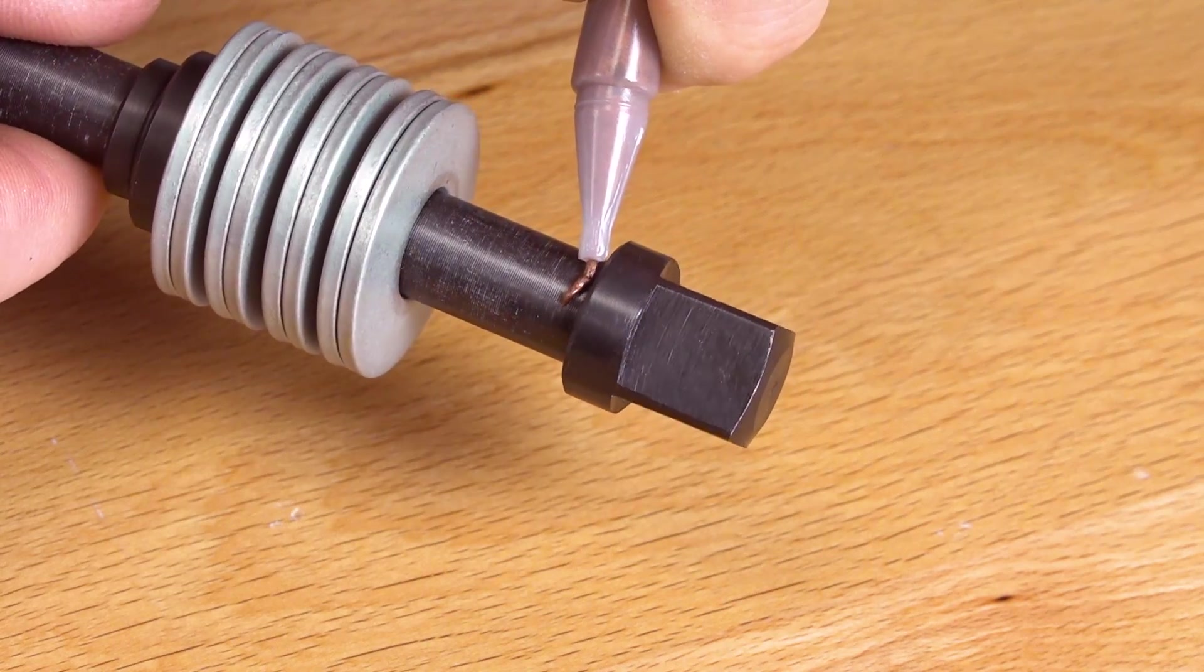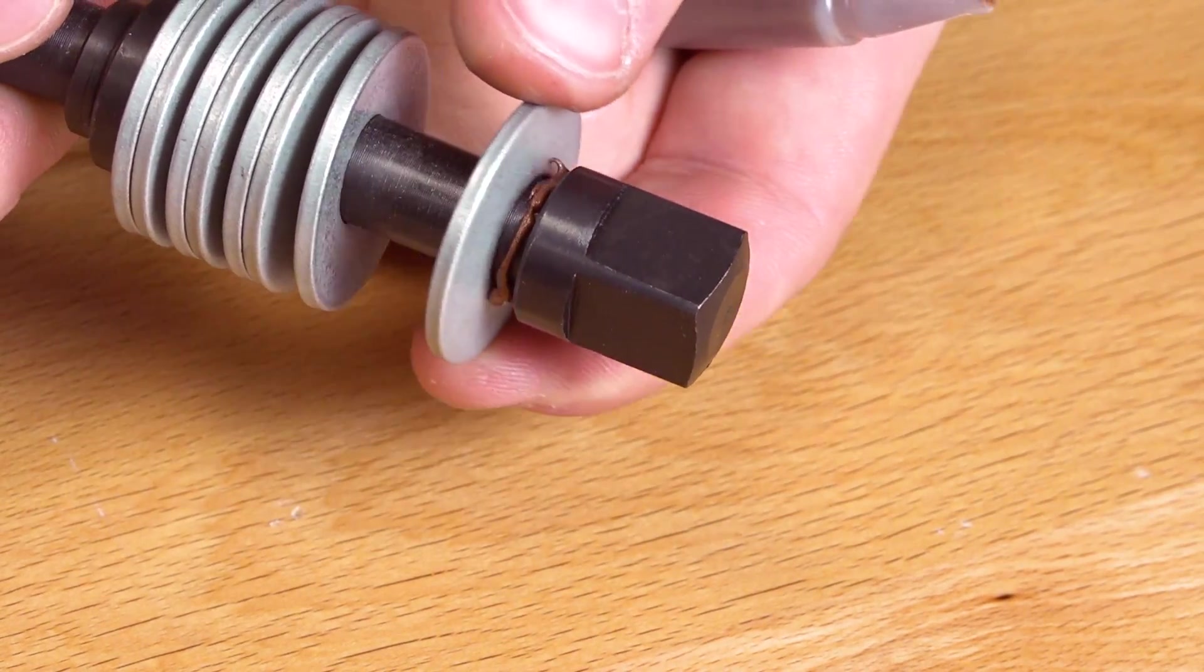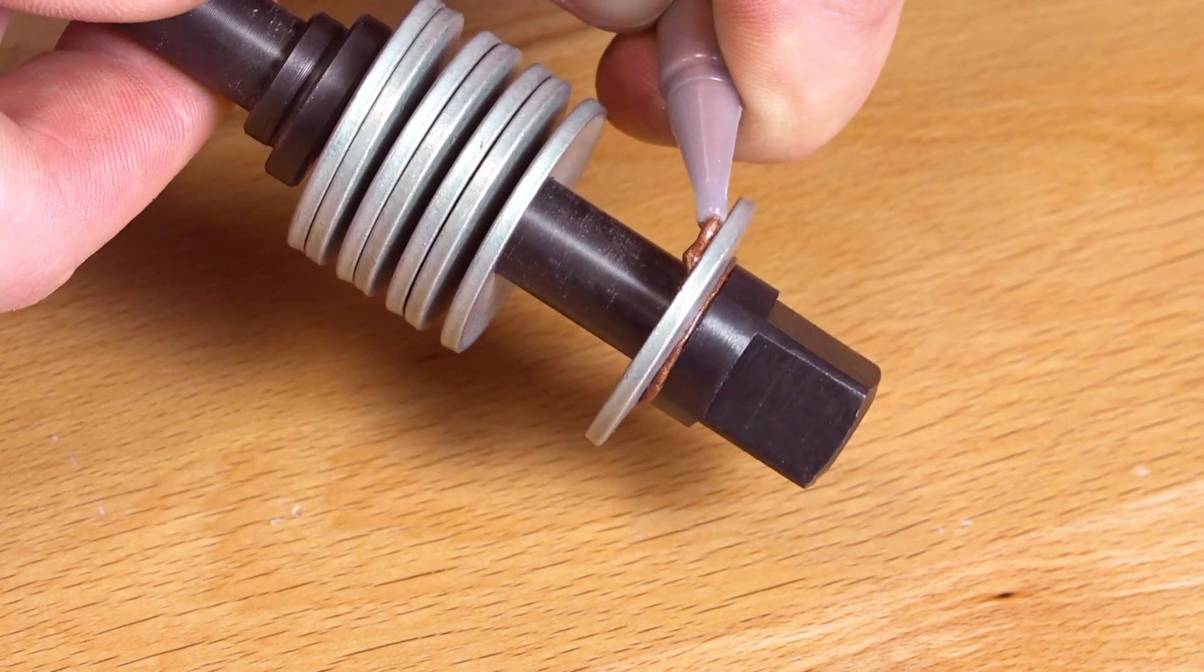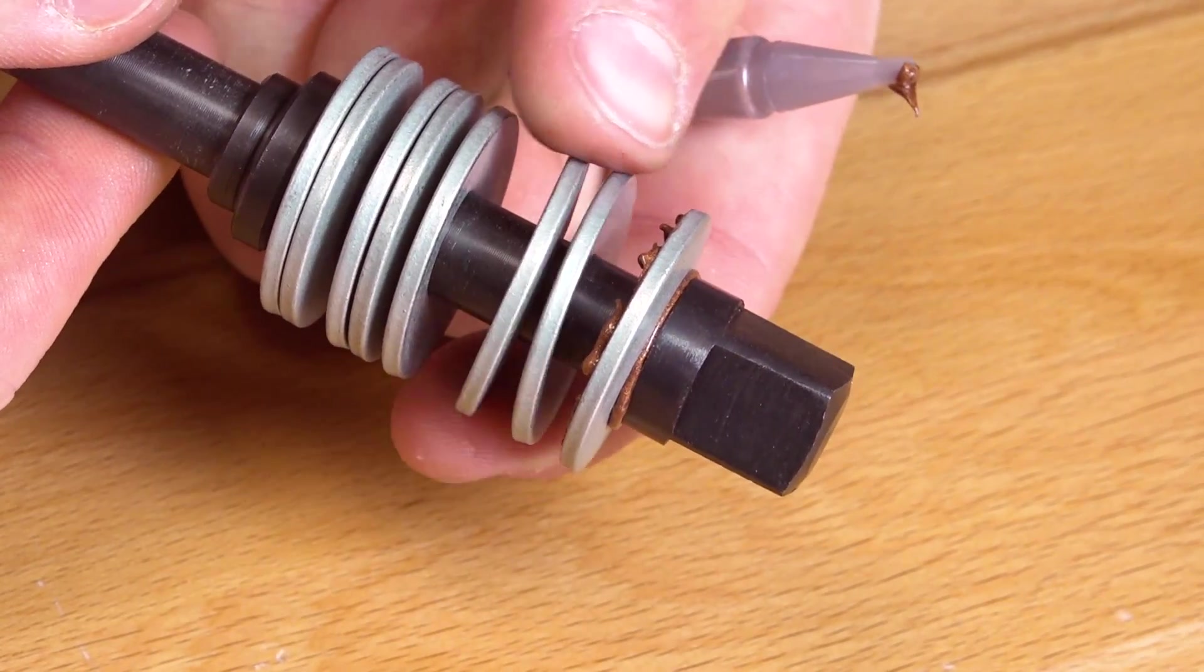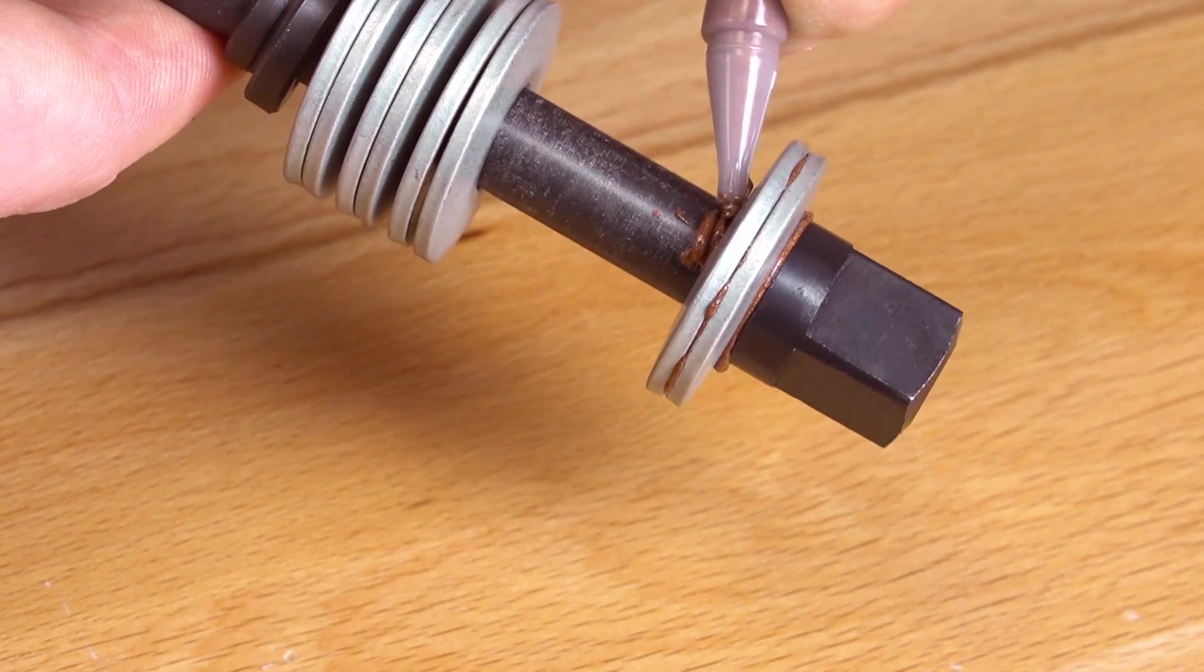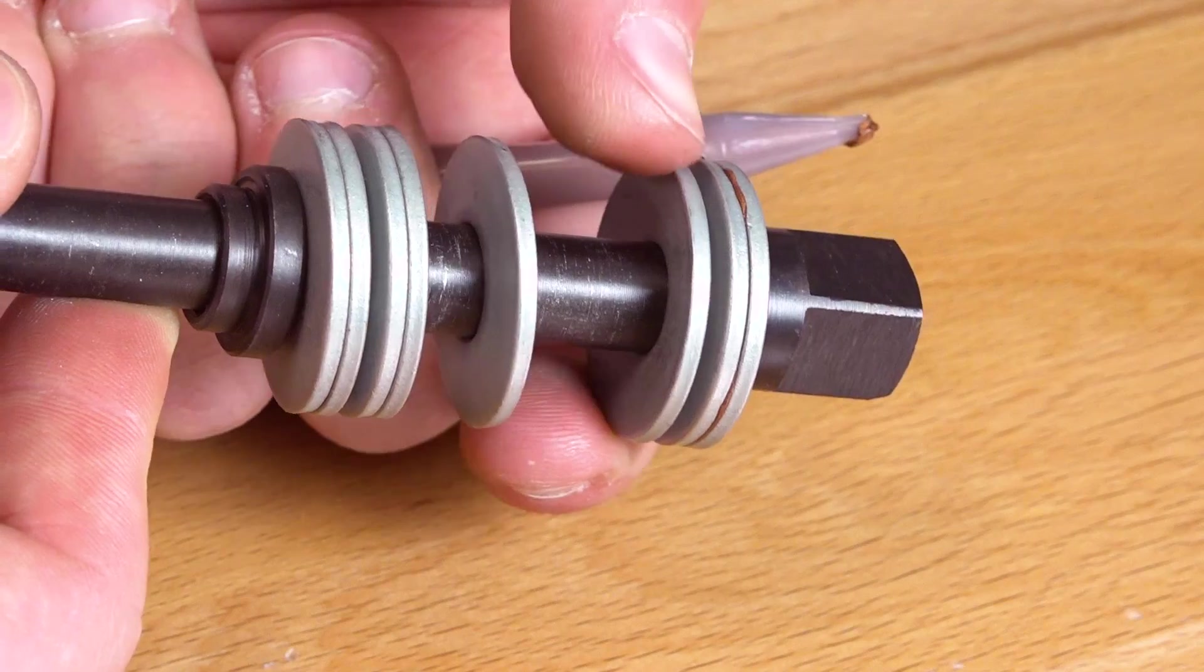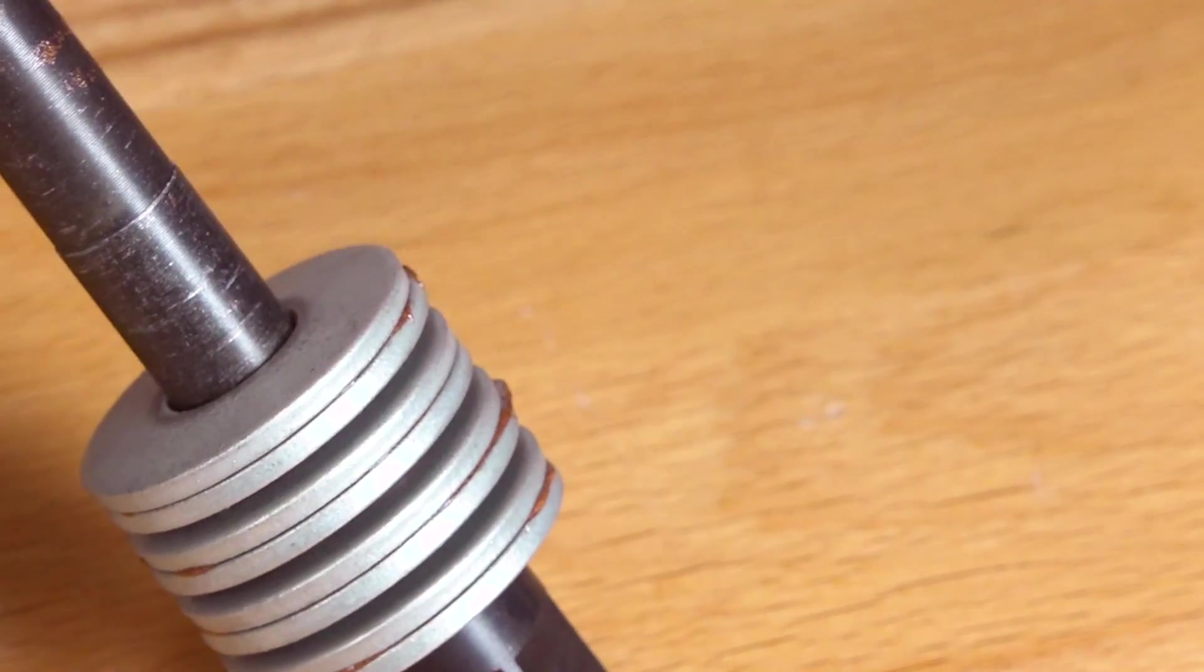Apply a bead of anti-seize to the uppermost edge of the drawbar post. Slide the first cupped washer into place. Then apply a bead of anti-seize to the outer lip of the first cupped washer. Align the first set of washers together. Apply a bead of anti-seize where the cupped washer meets the drawbar. Slide the third washer against the second. Repeat all these steps until all eight cupped washers are lubricated with the anti-seize.